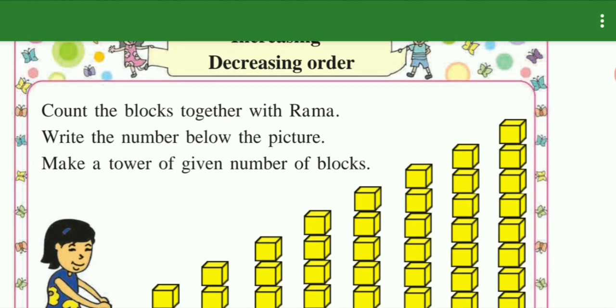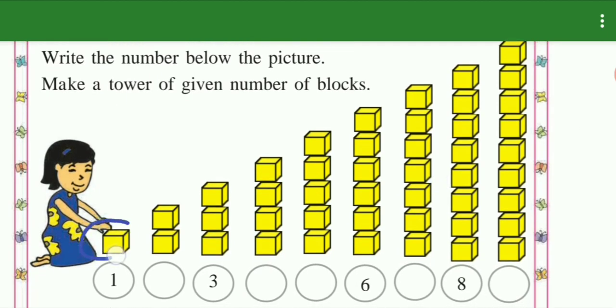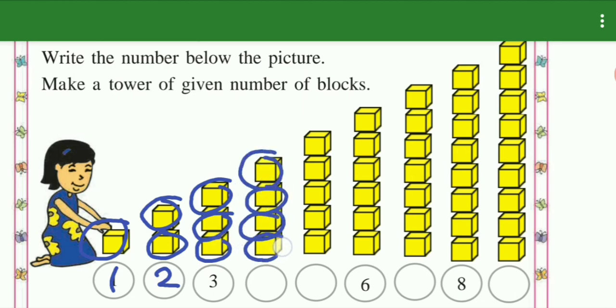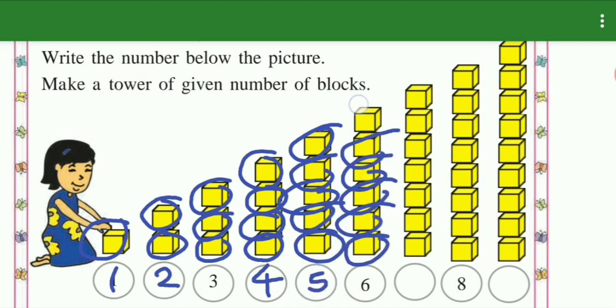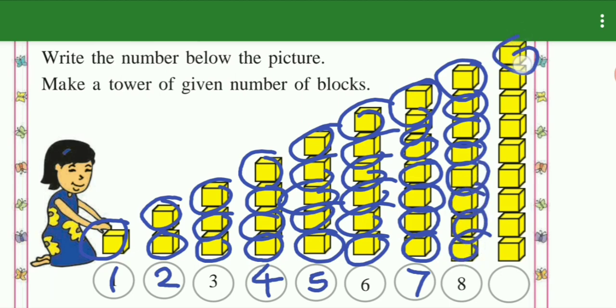Count the blocks together with Rama. Write the number below the picture. Make a tower of given number of blocks. Let's start: one block is one, two blocks is two, three blocks, one two three is three, and four blocks one two three four, five blocks one two three four five, and six blocks one two three four five six, seven, eight blocks one two three four five six seven eight, and nine.